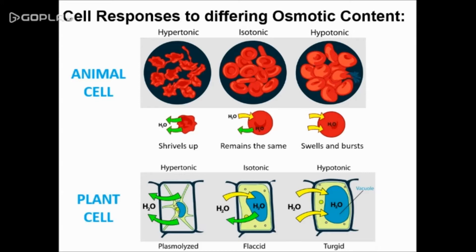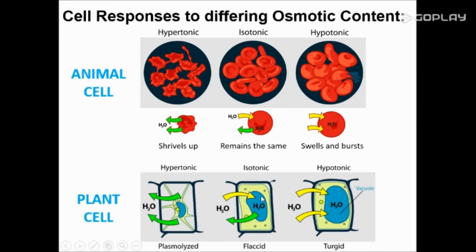When cells are placed in an isotonic solution, the animal cell has the same solute and water concentration inside and outside the cell, so there will be movement of water in and out of the cell but there will be no net change in the size of the cell. In the case of the plant cell, water will also be coming in and out, but there will be no net change and as a result the plant cell will remain flaccid.